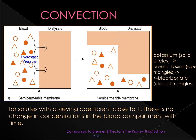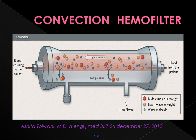Convection across a semipermeable membrane occurs when hydrostatic pressure is applied to the blood compartment, causing the solvent to flow across the membrane into the dialysate compartment and bringing solutes along with it — referred to as solvent drag. As a result, for solutes with a sieving coefficient close to 1, there is no change in concentration in the blood compartment. Convection occurs when solutes are transferred across a semipermeable membrane with plasma water in response to a hydrostatic pressure gradient created on the blood side of the hemofilter. Convection enhances the removal of low and middle molecular weight substances.